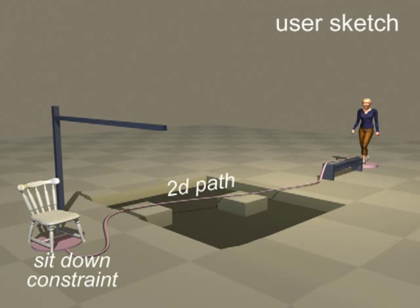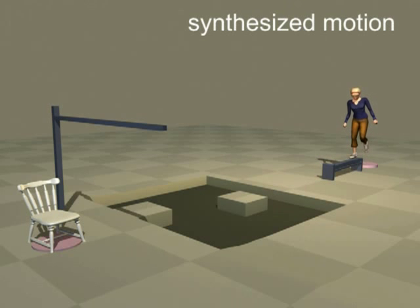Our goal is to synthesize high-quality motions based only on a simple sketch and a few easily specified constraints. For example, the user might specify a sketch like this. Within a few minutes, our algorithm finds a motion that follows the sketch and satisfies the constraints.